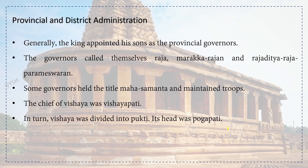Regarding provincial and district administration: generally the king appointed his sons as provincial governors. The governors called themselves Raja Marakkarajan and Raja Aditya Parameshwaram. Some governors held the title Mahasamantha and maintained troops. The chief of Vishaya was Vishayapati. In turn, Vishaya was divided into Bhukti, whose head was Bhoktapati.